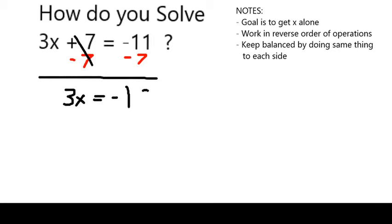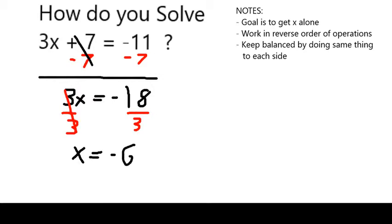So 3x is going to equal negative 18. Now to undo that multiplication of 3 times x, I can divide both sides by 3. So if I divide by 3 on the left-hand side, 3 over 3 is going to cancel, and that's going to leave me with just an x. And on the right-hand side, if I have negative 18 divided by 3, that's going to be negative 6. So I'm proposing that x equals negative 6 is the solution.